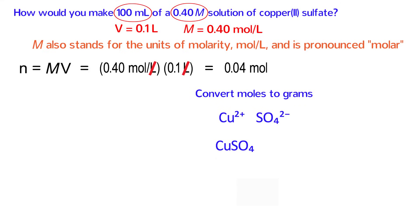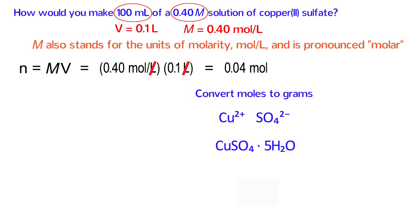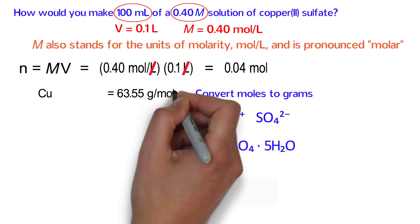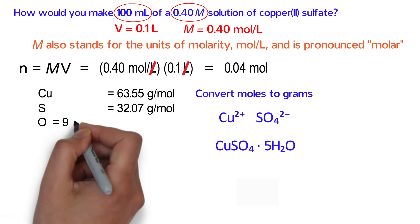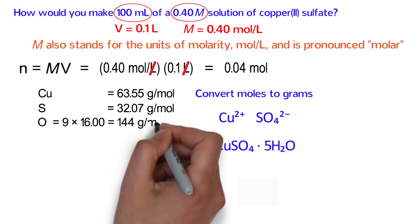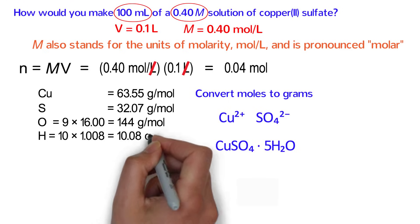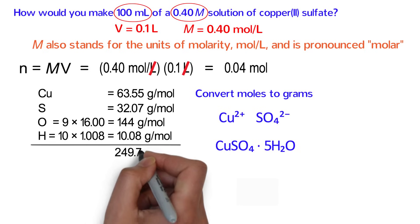However, CuSO4 sulfate is almost always found as the pentahydrate, which means it has five water molecules that have co-crystallized with the CuSO4 sulfate. These water molecules aren't really doing anything. They're basically just hitchhiking with the CuSO4 sulfate. However, these water molecules do affect the molar mass, which we'll go ahead and calculate now. The formula contains one copper, with a molar mass of 63.55 grams per mole. One sulfur, which is 32.07 grams per mole. Nine oxygens, so we multiply 9 times 16, which equals 144 grams per mole. And 10 hydrogens, so we multiply 10 times 1.008 to get 10.08 grams per mole. Add all these together to get the molar mass of 249.7 grams per mole.